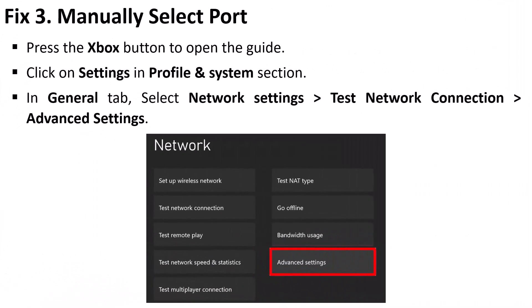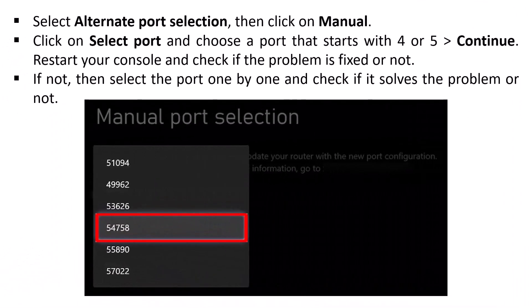Fix three is to manually select a port. Press the Xbox button to open the guide, click on Settings in the Profile and System section. In the General tab, select Network Settings, Test Network Connection, Advanced Settings, select Alternate Port Selection, then click on Manual. Click on Select Port and choose a port that starts with four or five, then continue. Restart your console and check if the problem is fixed. If not, select ports one by one to find which one works.